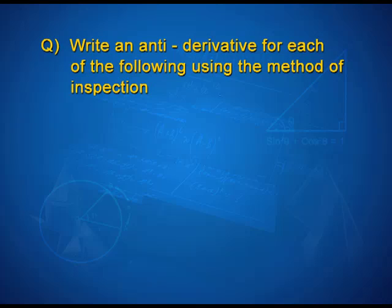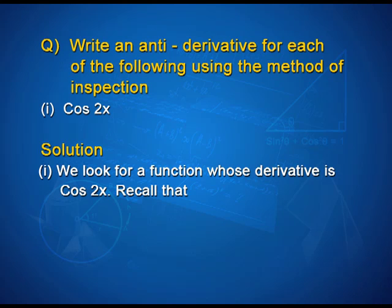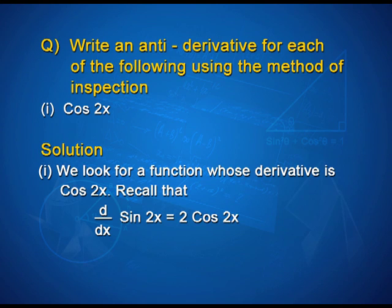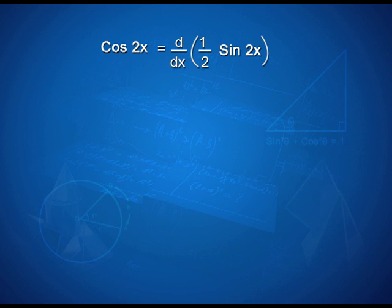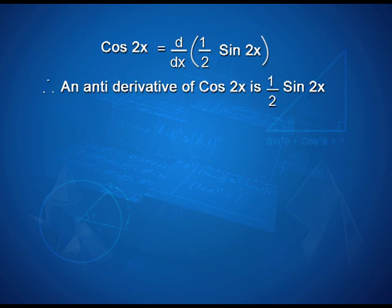Write an antiderivative for each of the following using the method of inspection. First, cos 2x. For cos 2x, we look for the function whose derivative is cos 2x. Recall that d/dx of sin 2x is equal to 2 cos 2x, or cos 2x is equal to (1/2) d/dx of sin 2x, that is equal to d/dx of (1/2 sin 2x). Therefore, an antiderivative of cos 2x is (1/2) sin 2x.